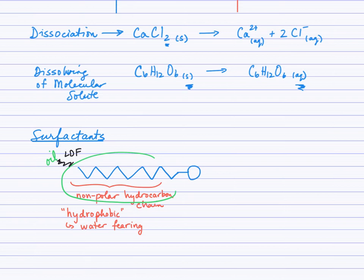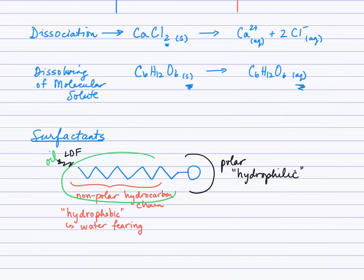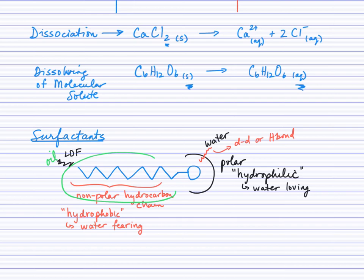At the other end of the molecule, we have the polar end — this is the hydrophilic or water-loving section of the detergent molecule. This end of the molecule will interact very well with water molecules through either dipole-dipole or even hydrogen bonding. Chemists solve the problem of oil and water not mixing by creating a detergent molecule, a surfactant, that will essentially interrupt the attractions of hydrogen bonds that water molecules experience between themselves and other water molecules.